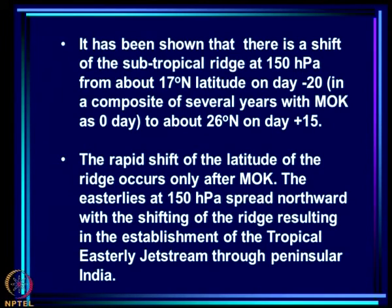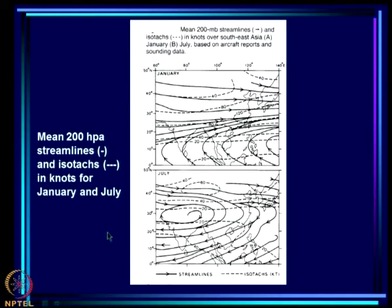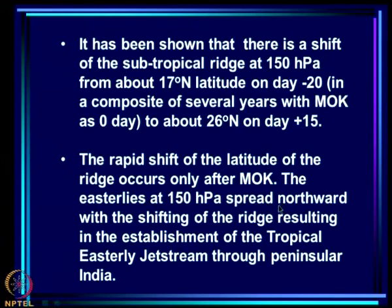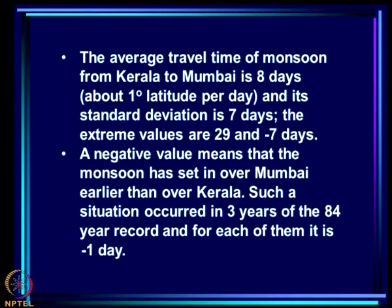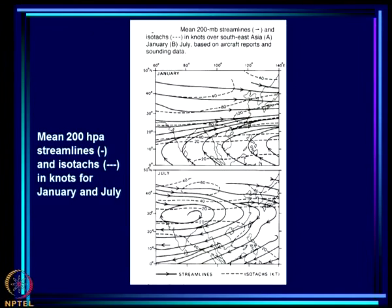It has been shown that there is a shift of the subtropical ridge at 150 hPa from about 17 degrees latitude on day minus 20 - in a composite of several years with MOK as day 0 - to about 26°N on day plus 15. So about 20 days before monsoon onset the ridge is around 17°N, and 15 days after onset it goes to 26°N.